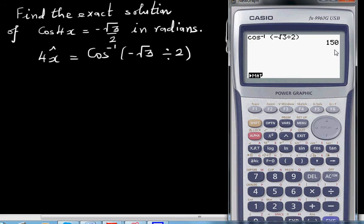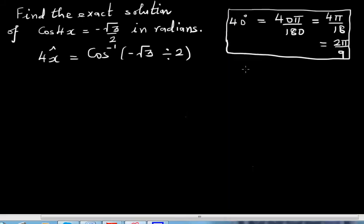Now 150, this is in degrees. So 150 degrees, if you want to write this in radians, is 150 pi over 180. Let's divide both by 10, which is 15 pi over 18. Now you can divide both 15 and 18 by 3. If you divide 15 by 3, it is 5. So it's 5 pi over 6. So you can say the principal angle 4x is equal to 5 pi over 6.